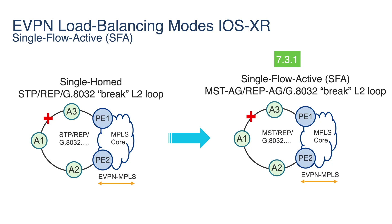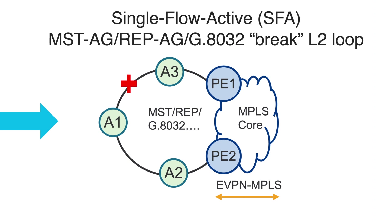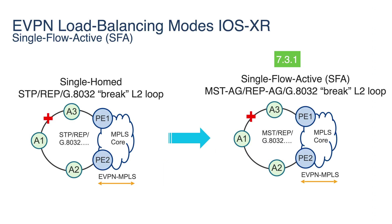In 7.3.1, we are trying to improve convergence for L2 legacy protocols connected to EVPN. When you take L2 legacy protocols like Spanning Tree or G.8032, you can connect them to EVPN. From the EVPN point of view, you can treat it as single-home, because you have the L2 legacy protocol taking care of the loop in the access. From the logical point of view, A3 is connected to PE1 and A1 and A2 are connected to PE2. We want to really improve the convergence time, so we are introducing single-flow-active, which leverages pre-programmed information on PE1 and PE2 to help speed up convergence when connecting L2 legacy protocols to EVPN.